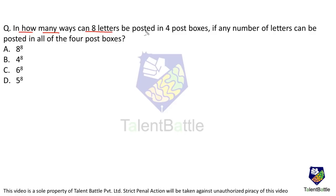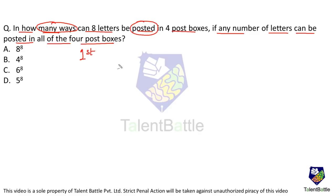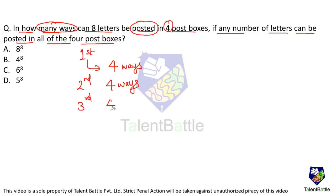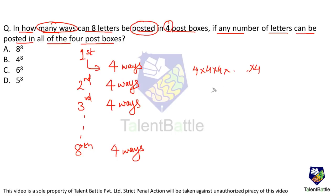In how many ways can eight letters be posted in four post boxes, if any number of letters can be posted in each box? The first letter can be posted in 4 ways, the second in 4 ways, and so on for all eight letters. So the total number of ways is 4 × 4 × … (8 times) = 4⁸, which is option B.